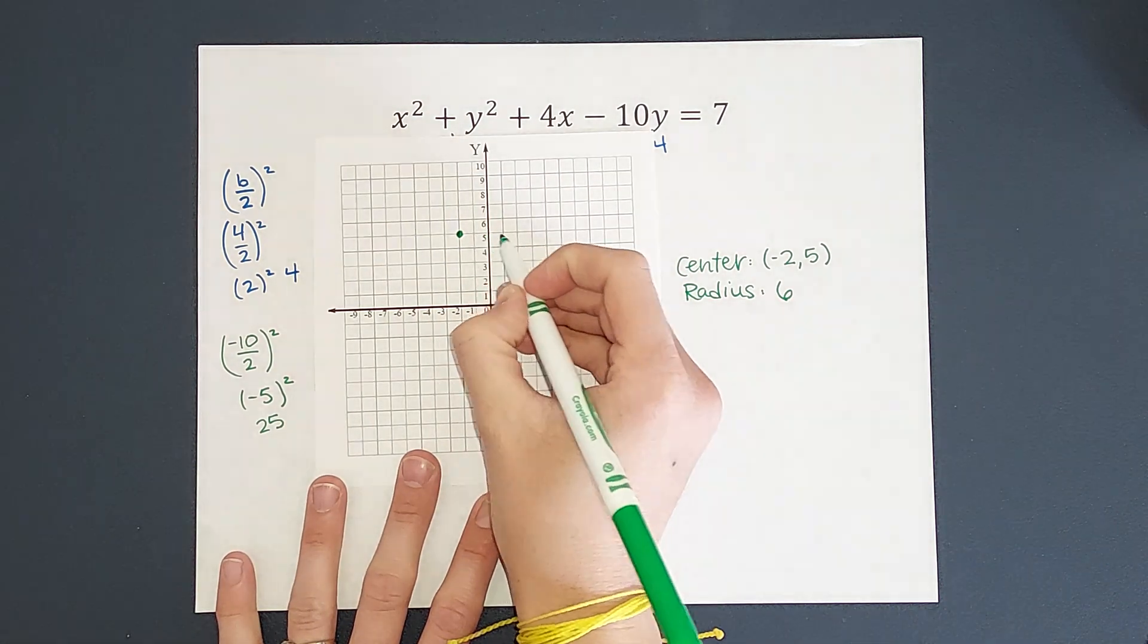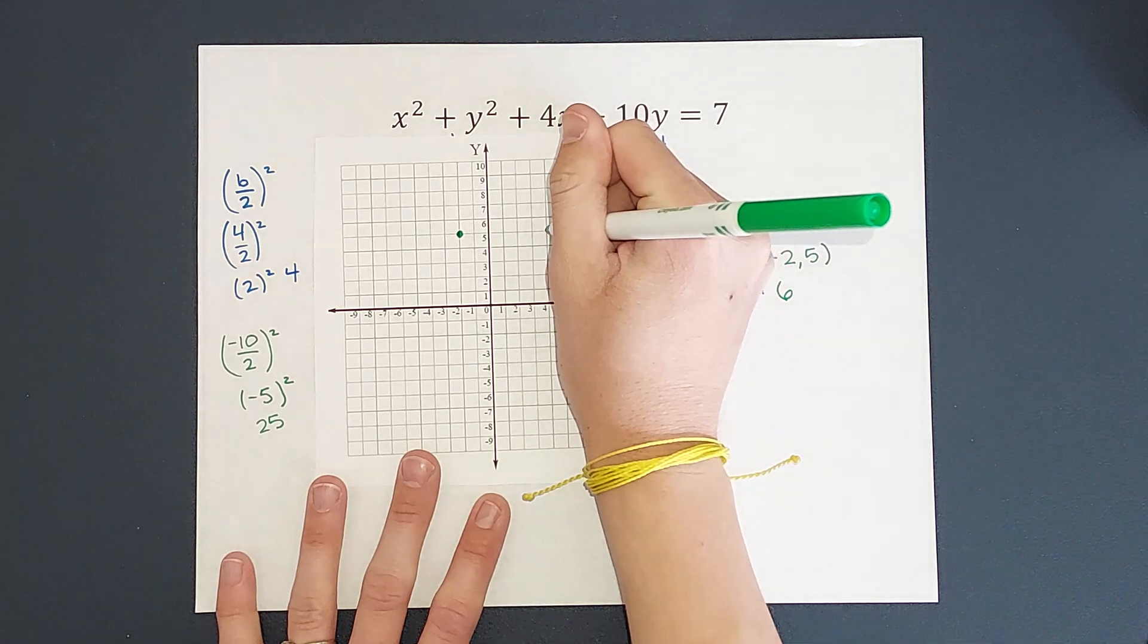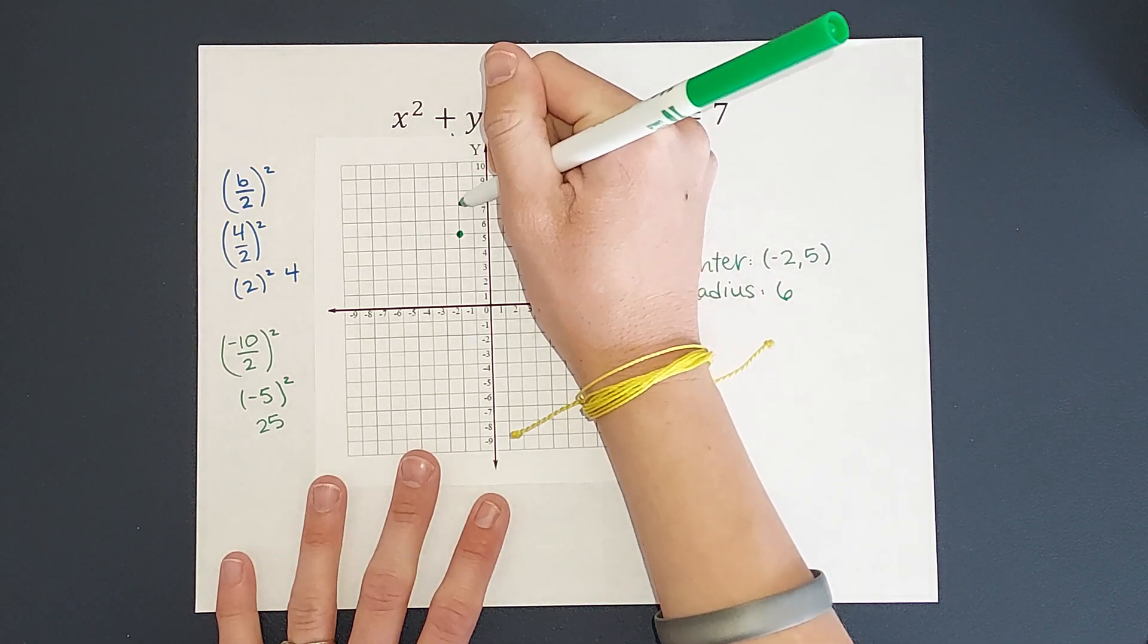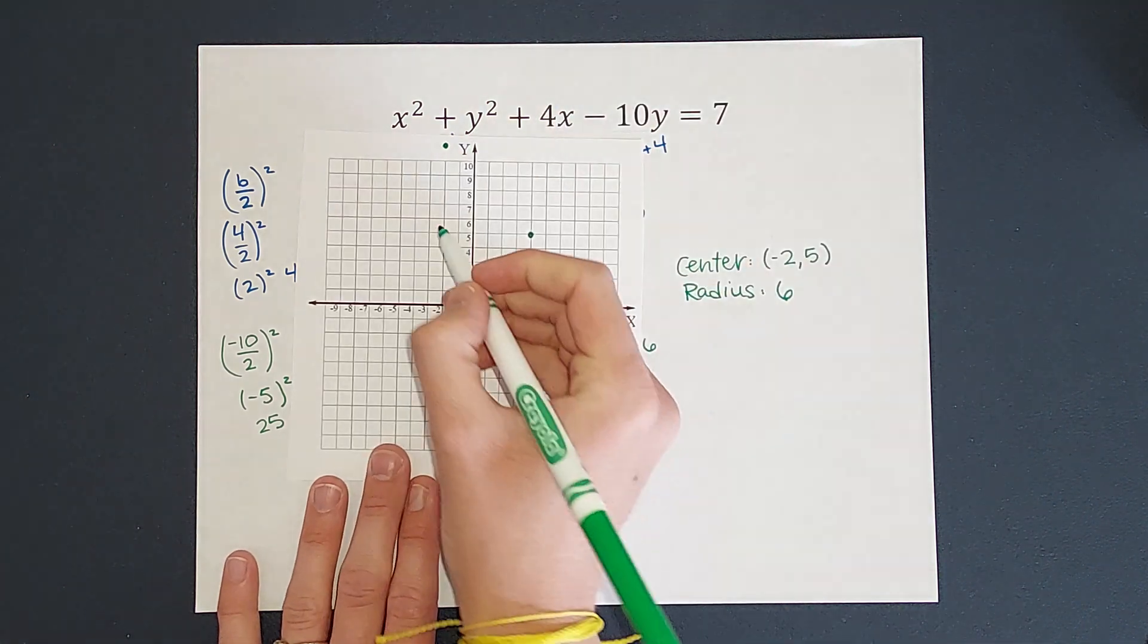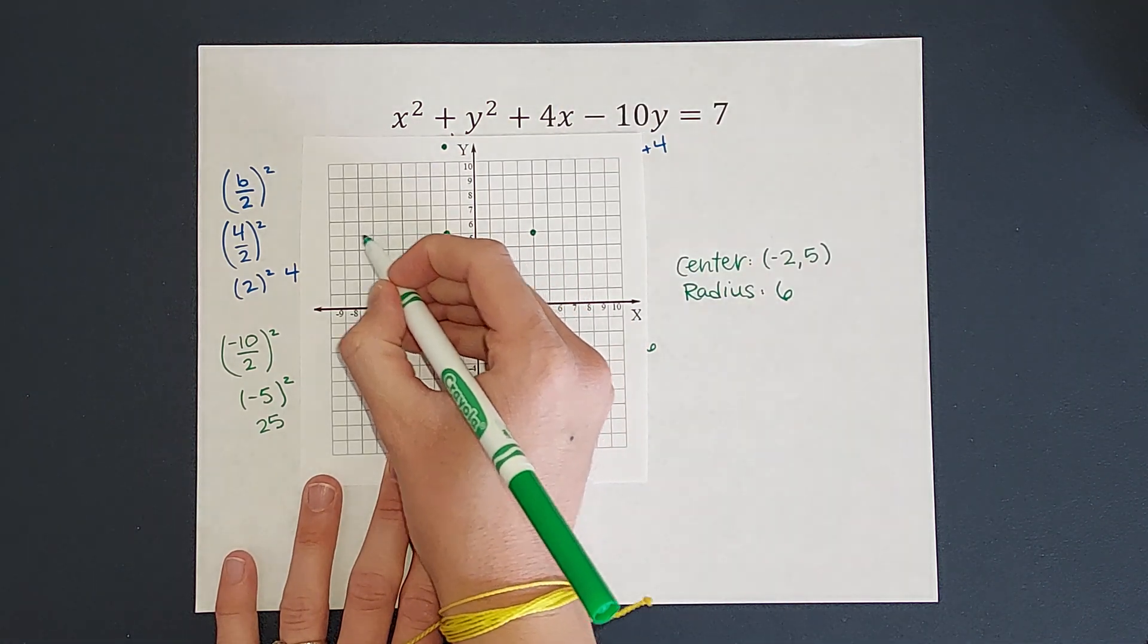So I'm going to go to the right 6, 1, 2, 3, 4, 5, 6. Up 6, 1, 2, 3, 4, 5, oh, we're a little off the graph, about there, right? 1, 2, 3, 4, 5, 6.